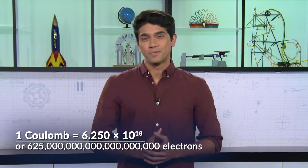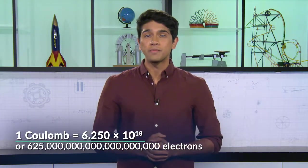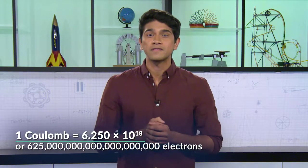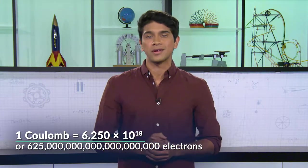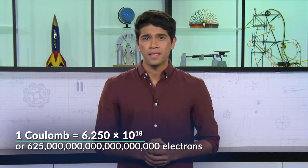A Coulomb is huge, by the way. To discharge one Coulomb, you must move 6.25 times 10 to the 18th electrons. That's a lot. And there's a very interesting thing about what Coulomb found.